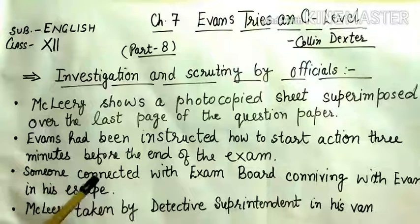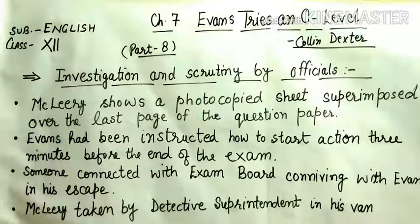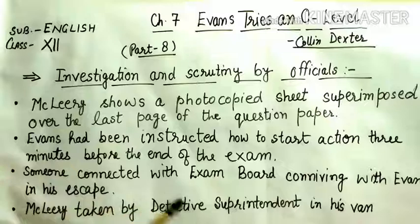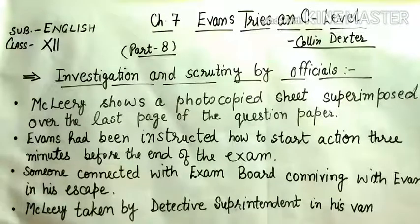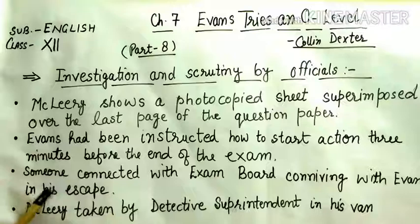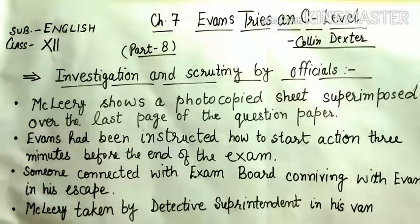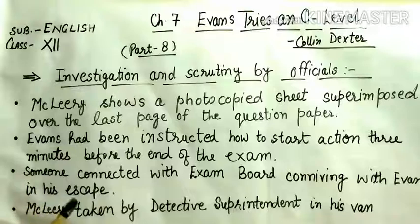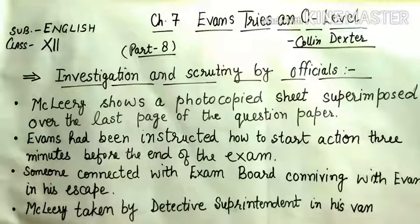Detective Superintendent Carter swings into action as he was informed. McLeary is very agitated and tells them that Evans had gone towards a field way. The governor takes Carter to take McLeary with him because he is the only one who knows what has really happened. They were also suspecting that someone connected with the examination board was supporting Evans in his escape, as there were no chances he could run away from the prison under such strict security.